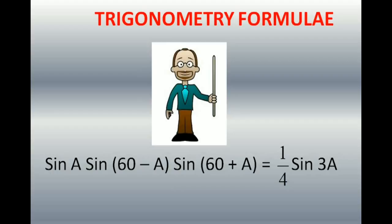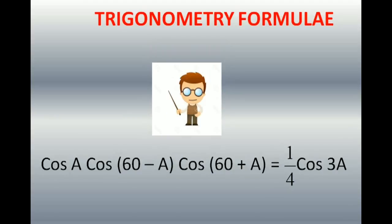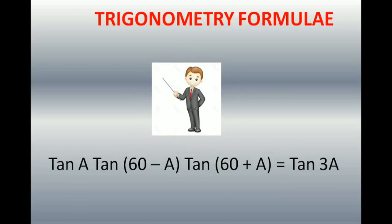Very important formula: sin A · sin(60°−A) · sin(60°+A) = (1/4) sin 3A. For example, sin 20° · sin 40° · sin 80° — write sin 40° as sin(60°−20°) and sin 80° as sin(60°+20°), then apply the formula: (1/4) sin(3×20°) = (1/4) sin 60°. Similarly, cos A · cos(60°−A) · cos(60°+A) = (1/4) cos 3A. And tan A · tan(60°−A) · tan(60°+A) = tan 3A.